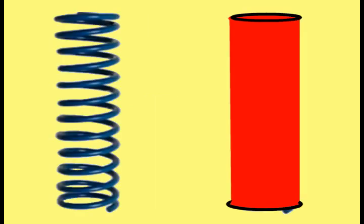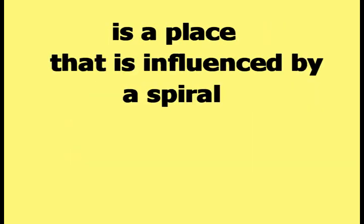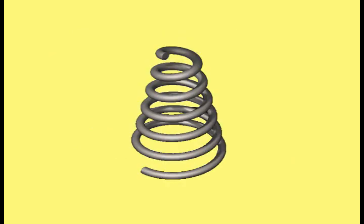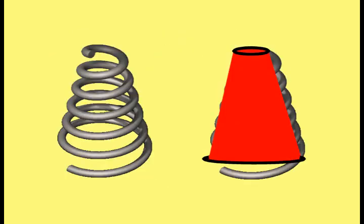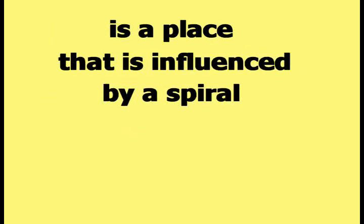A uniform diameter three-dimensional spiral, when made solid, results in a cylinder. This means any place in the human body where there is a cylindrical shape is influenced by a spiral. If a changing diameter three-dimensional spiral is made solid, the resulting shape is a cone. Therefore, any place in the human body where a cone shape is found is also a place influenced by a spiral.